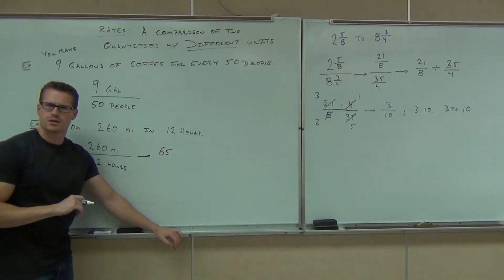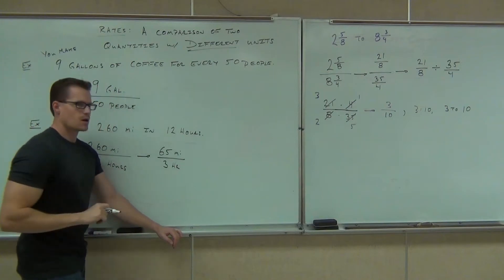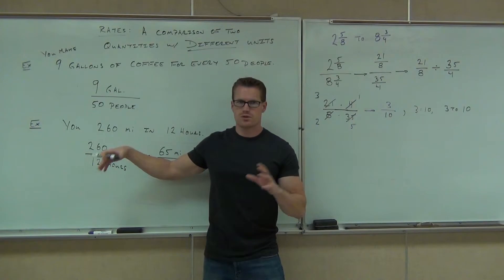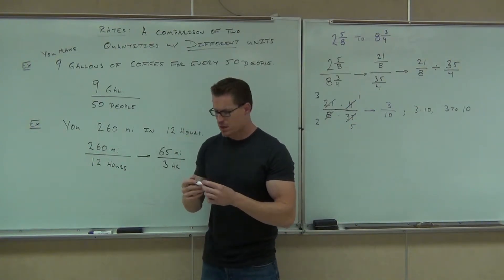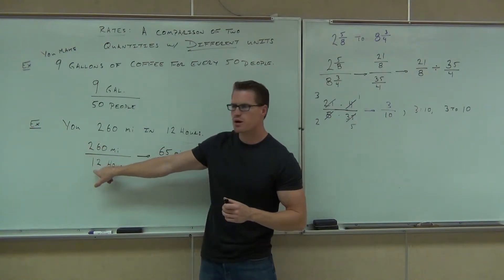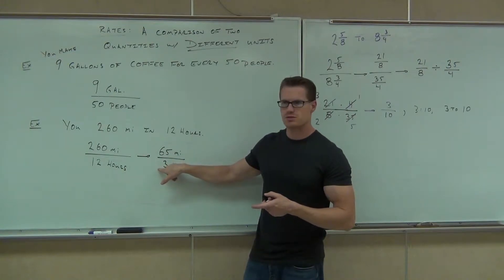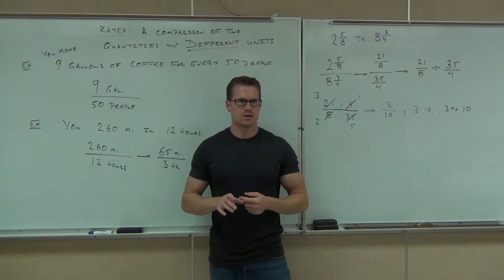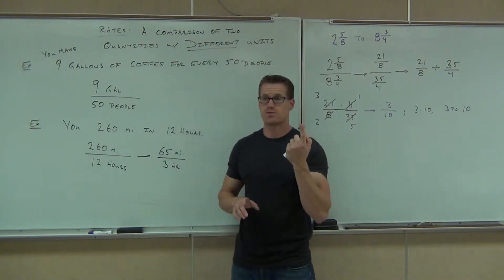Wait. 65 what? Miles. Over 3 what? Hours. Here's what this says. This says, if it took you, listen carefully, hopefully I'm not losing you here. I know some of you think you already have this. If you went 260 miles in 12 hours, what that means is that you probably went 65 miles in 3 hours. True? Yes. Could you figure out how far you went in 1 hour? How would you figure that out?